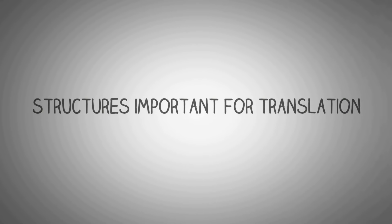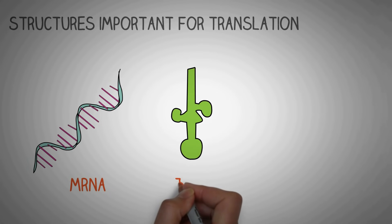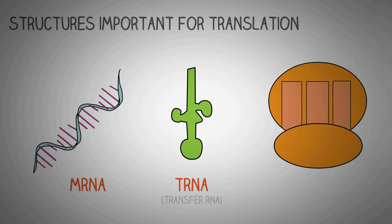Let's first have a brief look at what are the structures in the cell that make the process of translation possible. Besides the messenger RNA, translation also requires another type of RNA known as the transfer RNA or the tRNA. Ribosomes are dedicated cellular machineries that make this whole process possible.